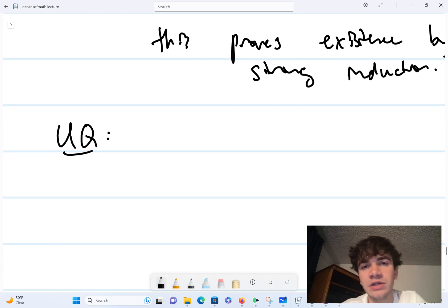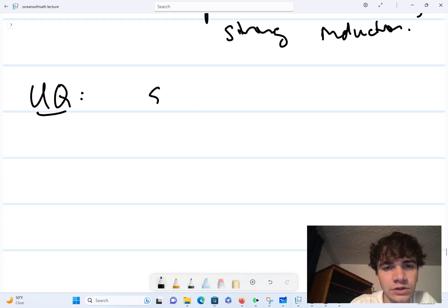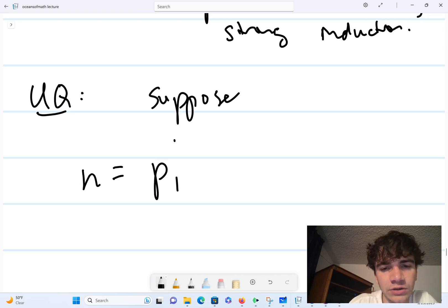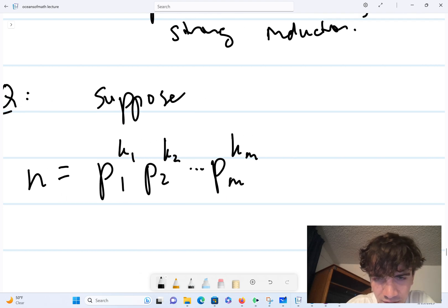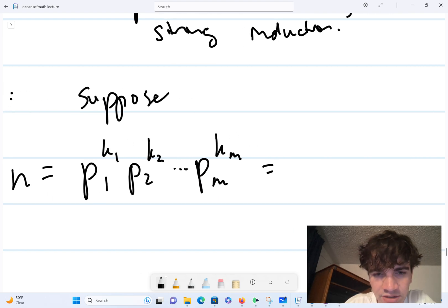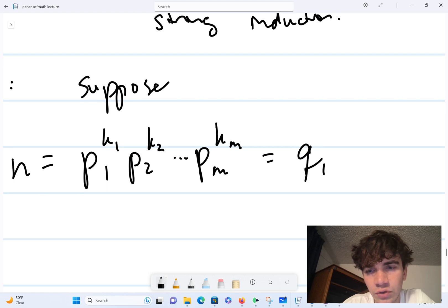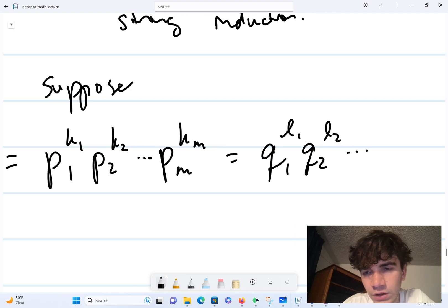So this is where the lemma is going to come into play. Suppose that I have n is equal to p1^k1 p2^k2 dot dot pn^kn. Well my notation is bad here, actually let me use m instead of n.